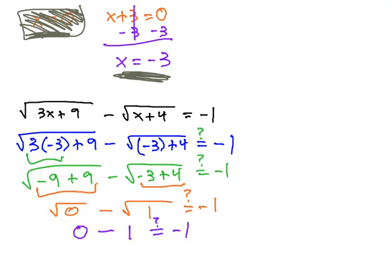The square root of 0 is 0 minus the square root of 1 is 1. Hopefully, that's negative 1 and sure enough, when we actually subtract 0 minus 1, we get negative 1. It works. It did give us a true solution.